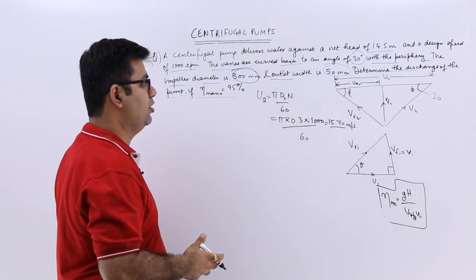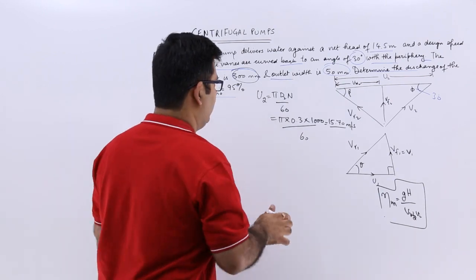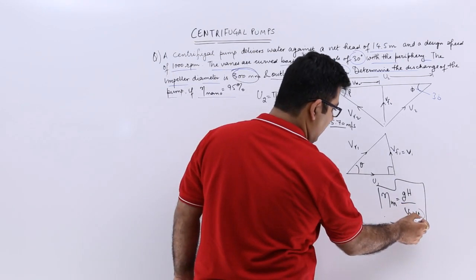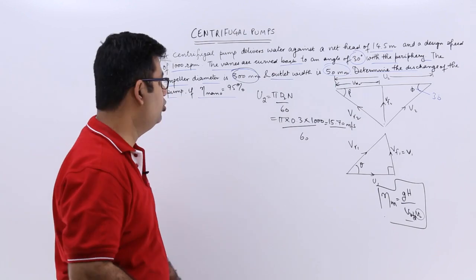So that is the value of the peripheral velocity at the outlet. So if I use this value of U2 over here I can very well find the value for Vw2 because I know